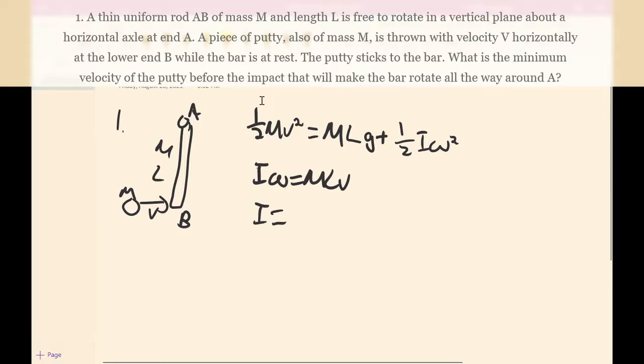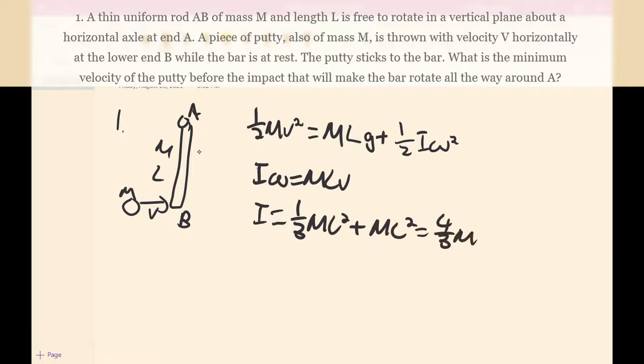So basically it's 1/3 ML squared. This is the moment of inertia for a normal rod around the end, and then there's this other mass M here. So then it's just plus ML squared. This is equal to 4/3 ML squared.